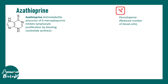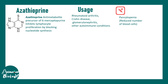Azathioprine is a nucleotide synthesis blocker and is a precursor of 6-mercaptopurine. It is used to treat rheumatoid arthritis, Crohn's disease, glomerulonephritis, and other autoimmune conditions. Side effects include pancytopenia — expected because the drug affects any rapidly dividing cells such as blood cell precursors — and intestinal dysbiosis, since intestinal cells also divide rapidly.